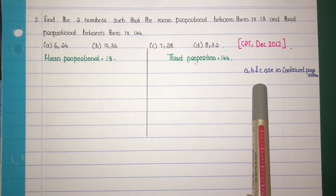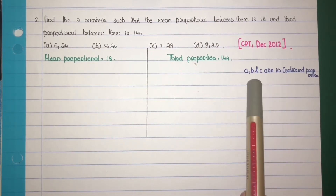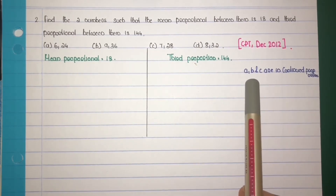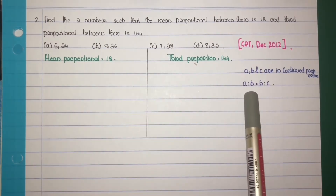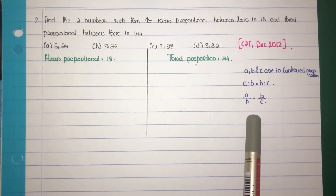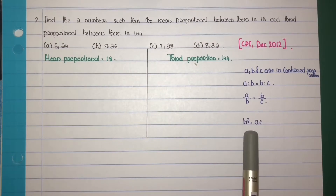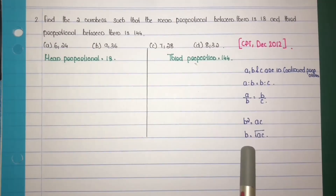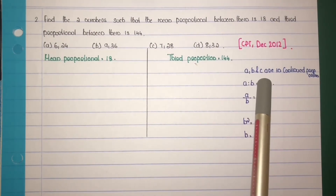If A, B, and C are in continued proportion, that is A is to B equal to B is to C, then A divided by B equals B divided by C. Cross multiplying, B squared is equal to AC, so B equals the square root of AC. Here A is the first proportional, B is the mean proportional, and C is the third proportional.